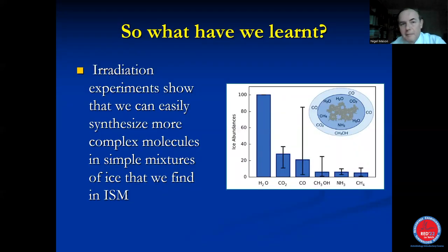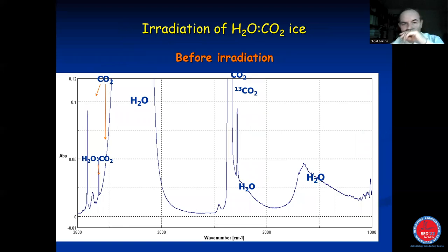So we've got many different types of experiments that we can do. What have they shown us? What have we learned? Well, what we have learned is that we can easily synthesize more complex molecules from very simple ice mixtures. So typically the most dominant ice in space is water ice, followed by carbon dioxide and carbon monoxide, with small amounts of methanol, ammonia and methane. And you'll see again that some of these molecules are the same as the ones that Urey and Miller suggested as being in the early Earth's atmosphere.